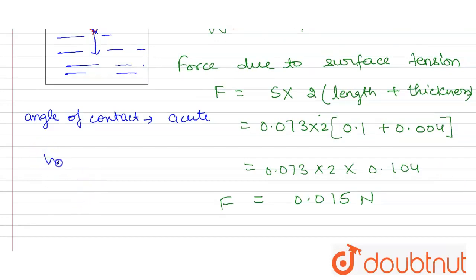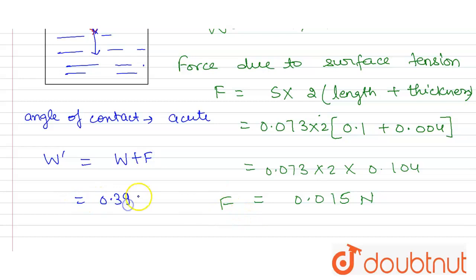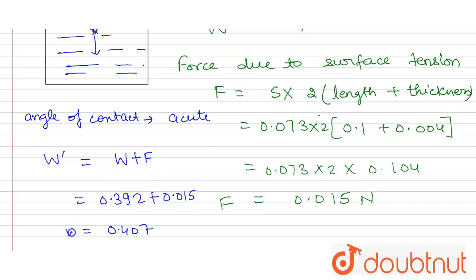So the apparent weight W' will be equal to W plus F. Therefore, W' = 0.392 + 0.015 = 0.407 newtons.